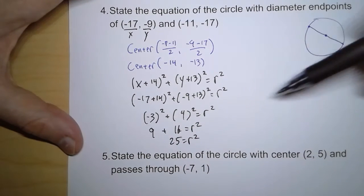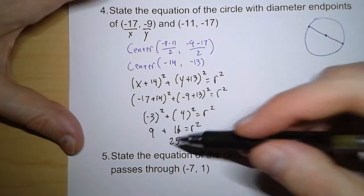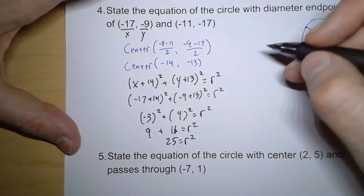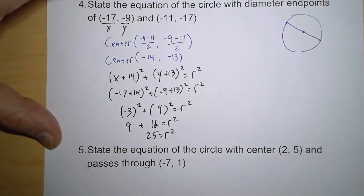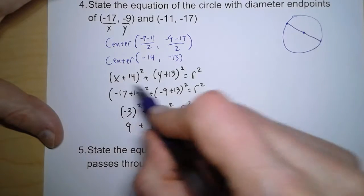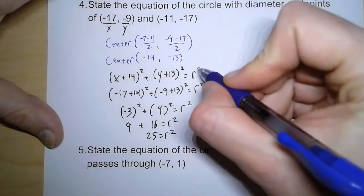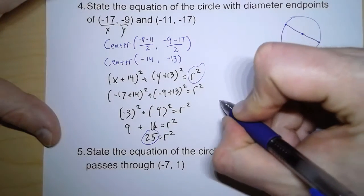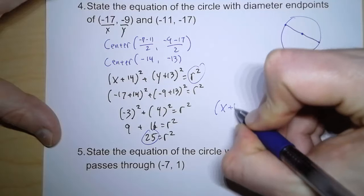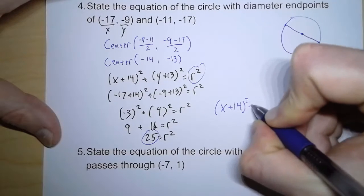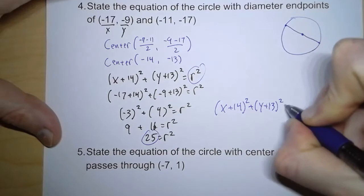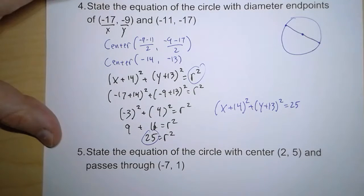Now, interestingly enough, we don't actually need to know the radius, but we can easily take the square root and see that it's 5. What we care about is the equation. So, from up here, all we have to do is replace r squared with what we found it to equal, 25. So that's x plus 14 squared, plus y plus 13 squared, equals 25. And there we go. There's our equation.